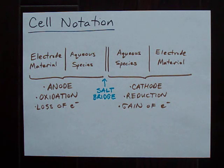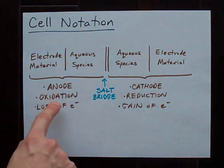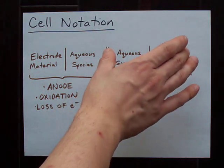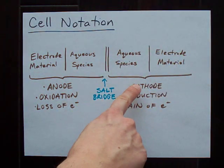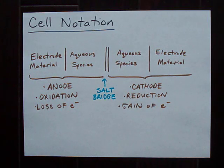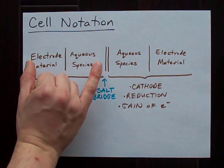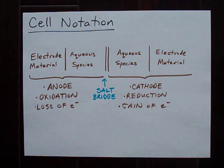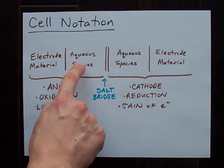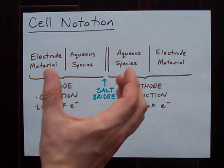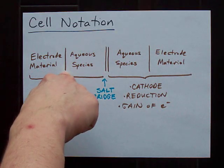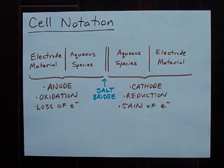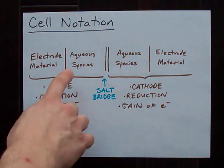On the left of a double bar, you have everything that happens at the anode. That's where oxidation is happening. Everything on the right of the bar is going to be the cathode, where reduction is happening. Now that double bar represents the salt bridge. On the left side, you have your electrode material. It's usually a solid, like a platinum electrode or an iron electrode, some kind of metal that conducts electricity. And then after a single bar, you're going to have all the different aqueous species that you have in that beaker. This single bar actually represents a phase boundary, which means it's the difference between a solid phase and an aqueous phase.